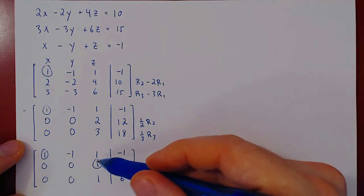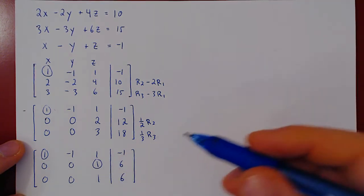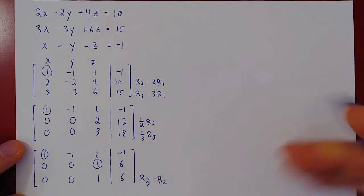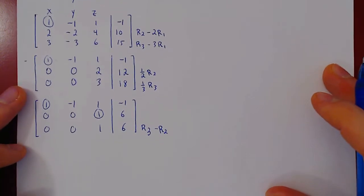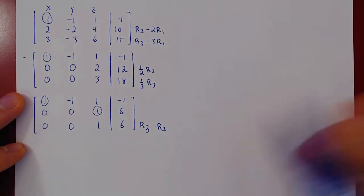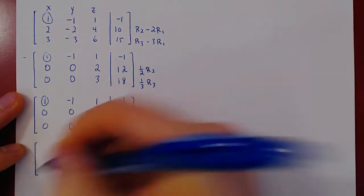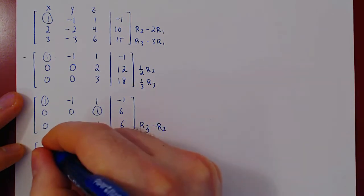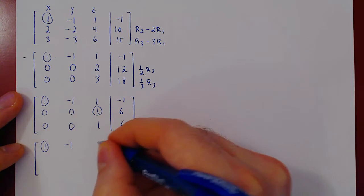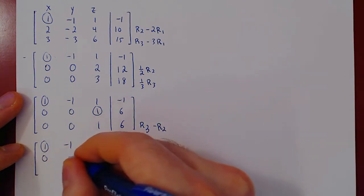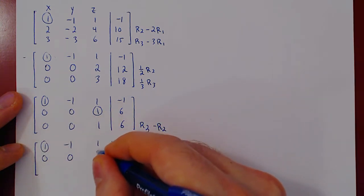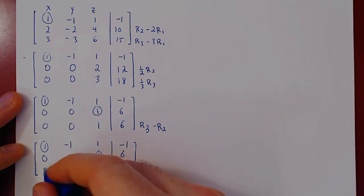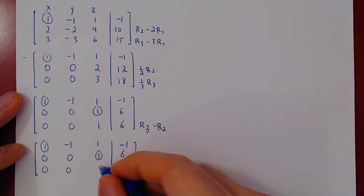We have our second leading one and now kill the entries below it — this is quite simple: row three minus row two. We recopy the first two rows as we're not changing them. Applying row three minus row two, the entire third row becomes a row of zeros.